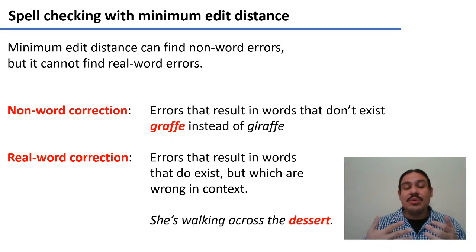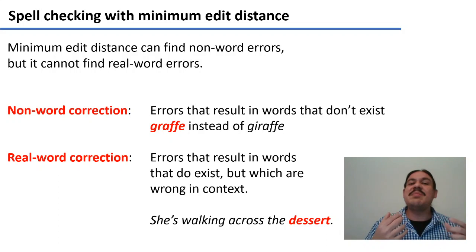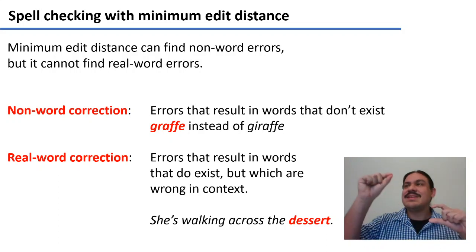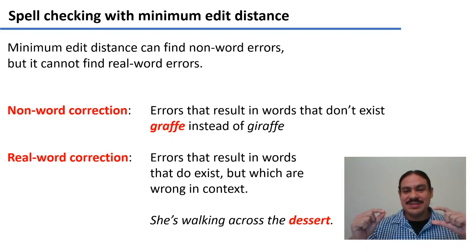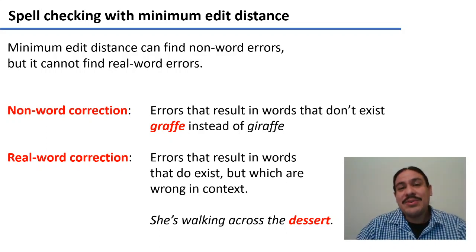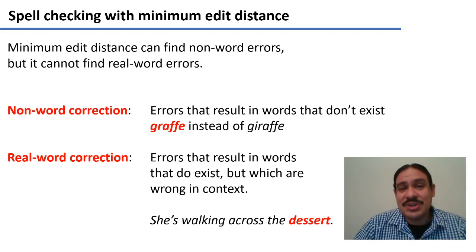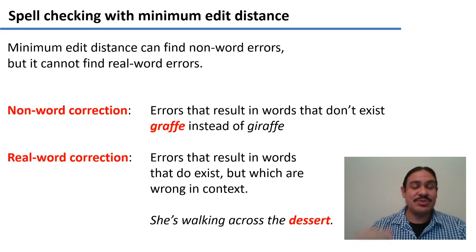However, you can also have real-word errors — such as in this sentence: 'she's walking across the dessert.' Minimum edit distance will find that the dictionary does include the word 'dessert' and say there's nothing wrong with that word. However, your human brain is probably telling you that you cannot walk across the dessert; you can probably walk across the desert with just one 's'.